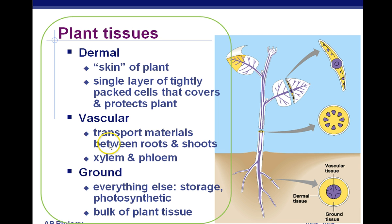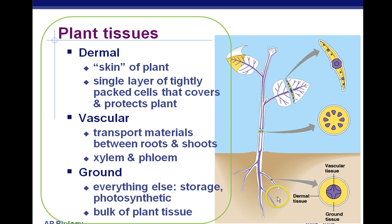Vascular tissue refers to tubes — that's what you should know for vascular. This is transport for materials between shoots and roots. These two tubes are called xylem and phloem, which we'll go into detail on later. Xylem are the water tubes; phloem are the food or sugar tubes. Xylem transports water from the roots up to the leaves.